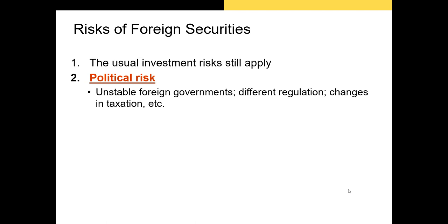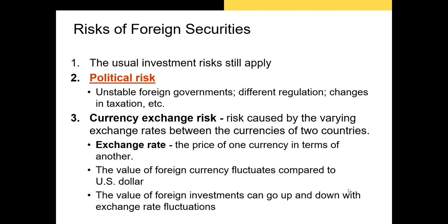A common political risk event in developing countries is nationalization — when the government announces it's taking over the assets of some business or group of people. This happened in the 1950s in Iran when assets of what later became British Petroleum were seized by the Mossadegh regime. Venezuela nationalized its oil industry in 1976, taking control of wells and refineries. There are many such nationalization events across the developing world — South America, sub-Saharan Africa, and parts of Asia.